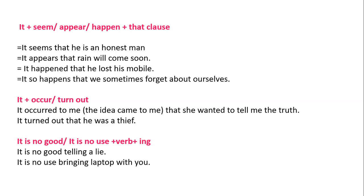'It occurred to me that she wanted to tell me the truth' — meaning the idea came to me. 'It turned out' means it proved ultimately: 'It was proved that he was a thief.' Also: 'It is no good telling a lie', 'It is no use bringing a laptop with you' — where the structure is 'it is no good/use + verb + ing.'